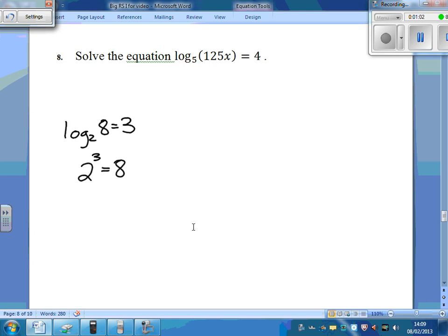Let's see how that links with our one here. Instead of a 2, we've got a 5. So it's 5 to the power of 4. 5 to the power of 4 is 125x. Well, 5 to the power of 4, I think, is 625. And you can work out what x is from that one.